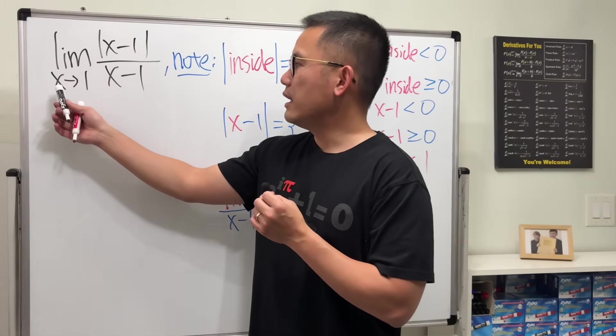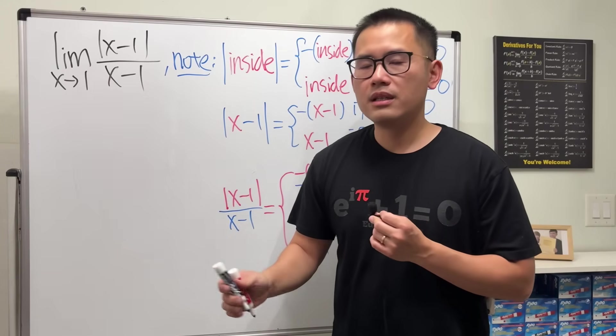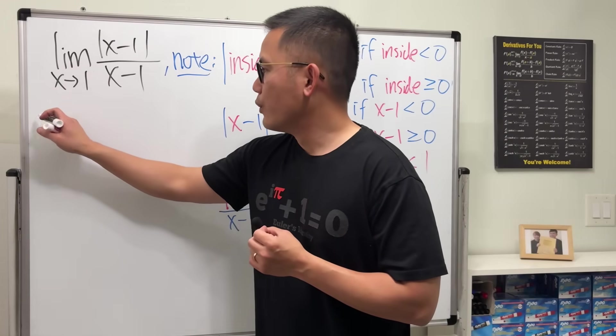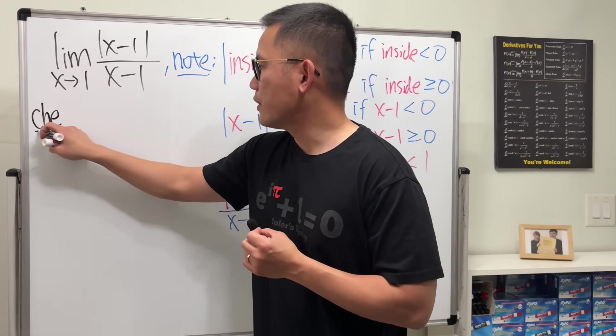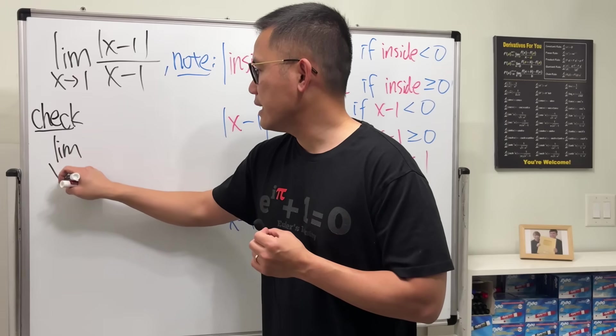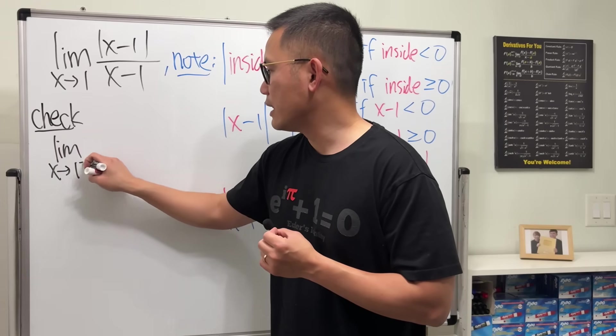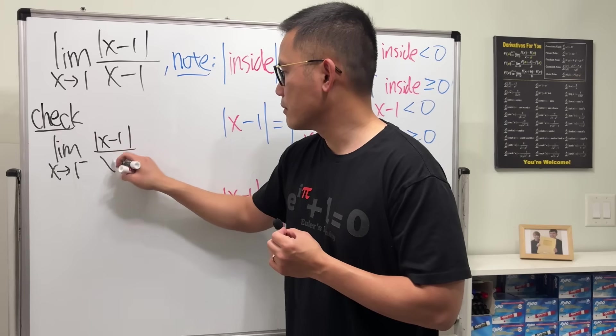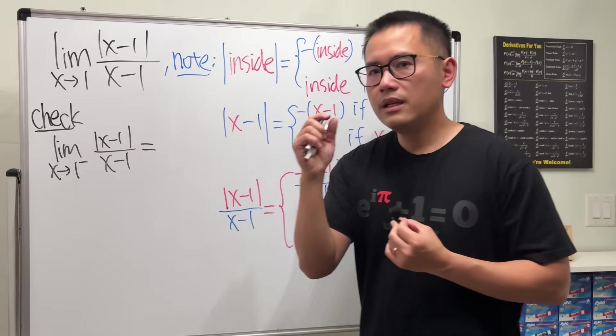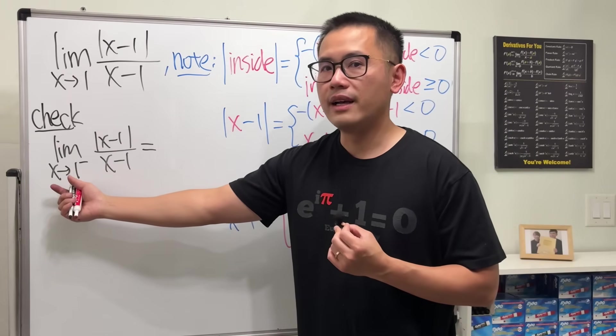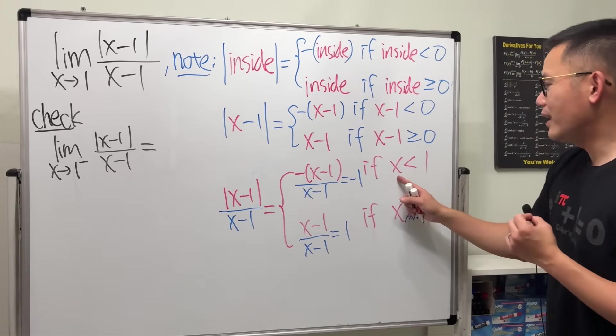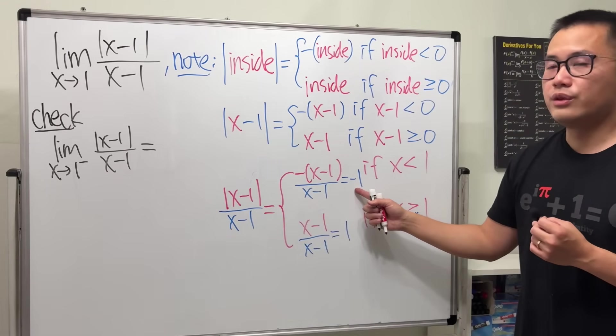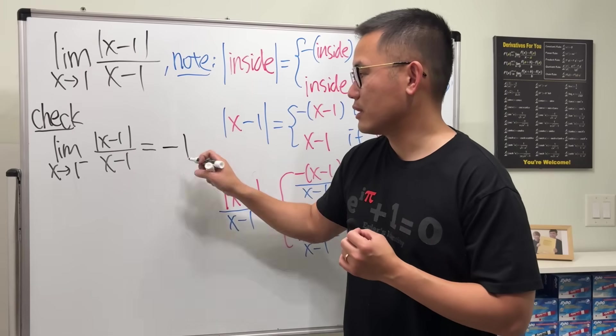When we have a limit as x approaching 1 without any plus or minus, technically, we have to do both directions. So we will have to check both. First, we check the limit as x approaching 1. Let's do the left-hand side first of the function. This means x is a little bit less than 1. Well, if x is less than 1, the function is actually just going to give you negative 1. Therefore, this limit has to be just negative 1.